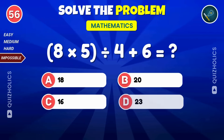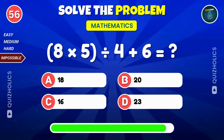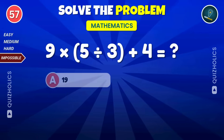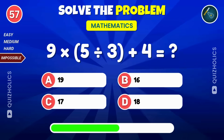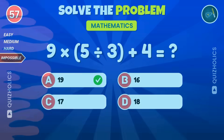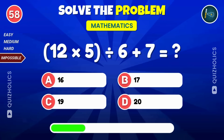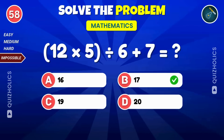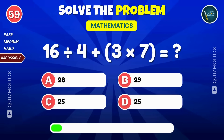Solve this: 8 times 5, divided by 4, then add 6. Don't give up: 9 times 5, divided by 3, then add 4. Test your skills: 12 times 5, divided by 6, then add 7. This one's a brain buster: 16 divided by 4, then add 3 times 7.